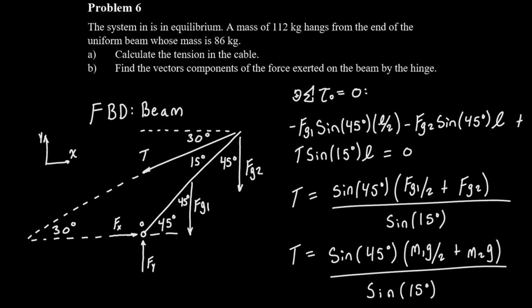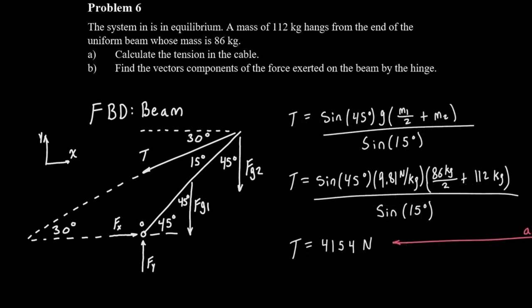Now you'll notice that the length of the beam shows up in every term of this equation. So we can divide through by the length and just cancel it out. Then we can rearrange for our tension and replace all of our FGs with mass times gravity. Once we've got that we can plug in our numbers. M1 is going to be the mass of the beam 86 kilograms and M2 is going to be the mass hanging off the end of the beam 112 kilograms. Then we get our tension as 4154 newtons.